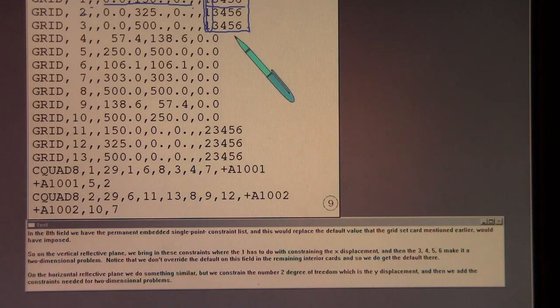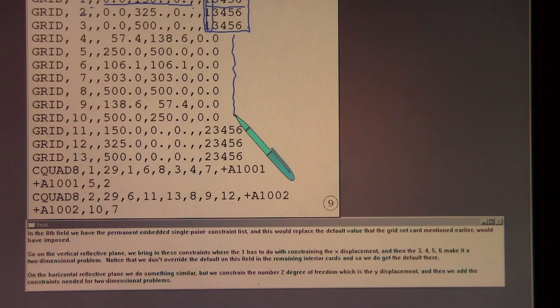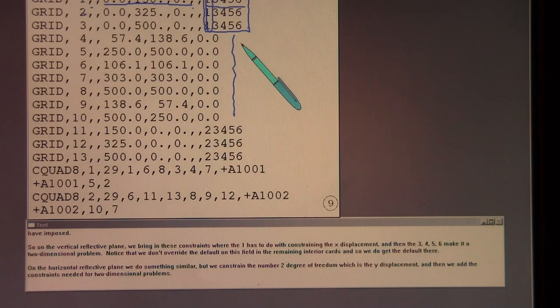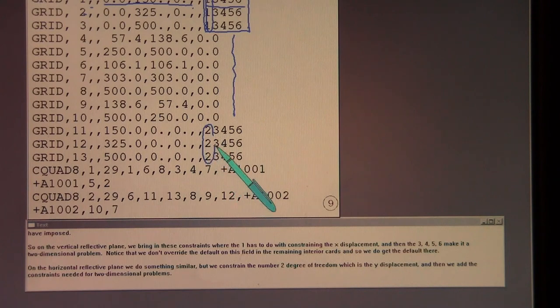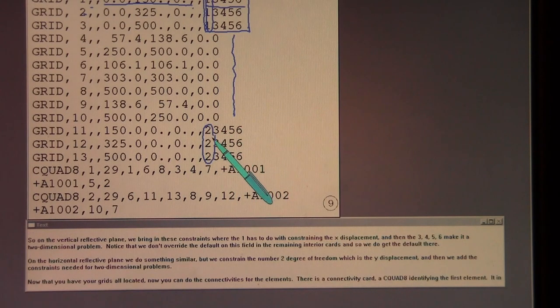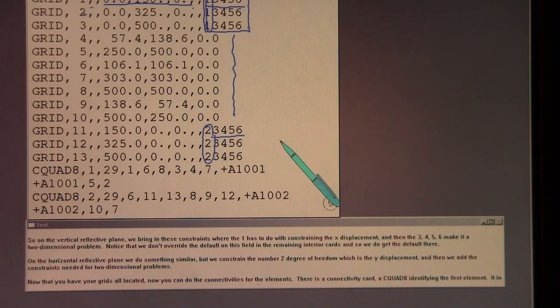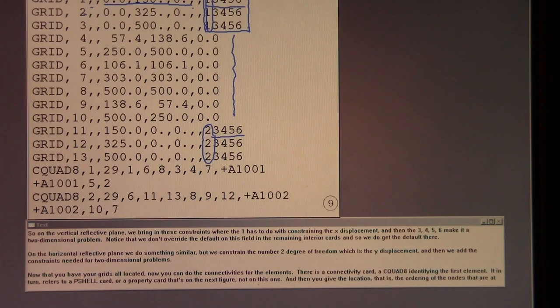Notice that we don't override the default on this field in the remaining interior cards, and so we do get the default there. On the horizontal reflective plane we do something similar, but we constrain the number two degree of freedom, which is the Y displacement, and then we add the constraints needed for two-dimensional problems.